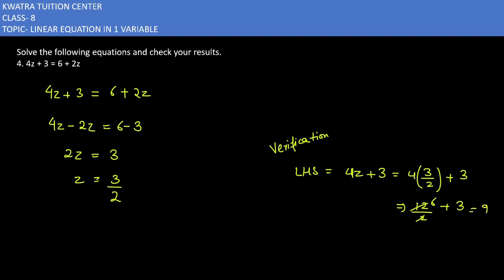Add them, so 6 plus 3. And then right hand side, what do you have to do? 6 plus 2z. Where z is 3 by 2, what do you have to do? 6 plus 3.